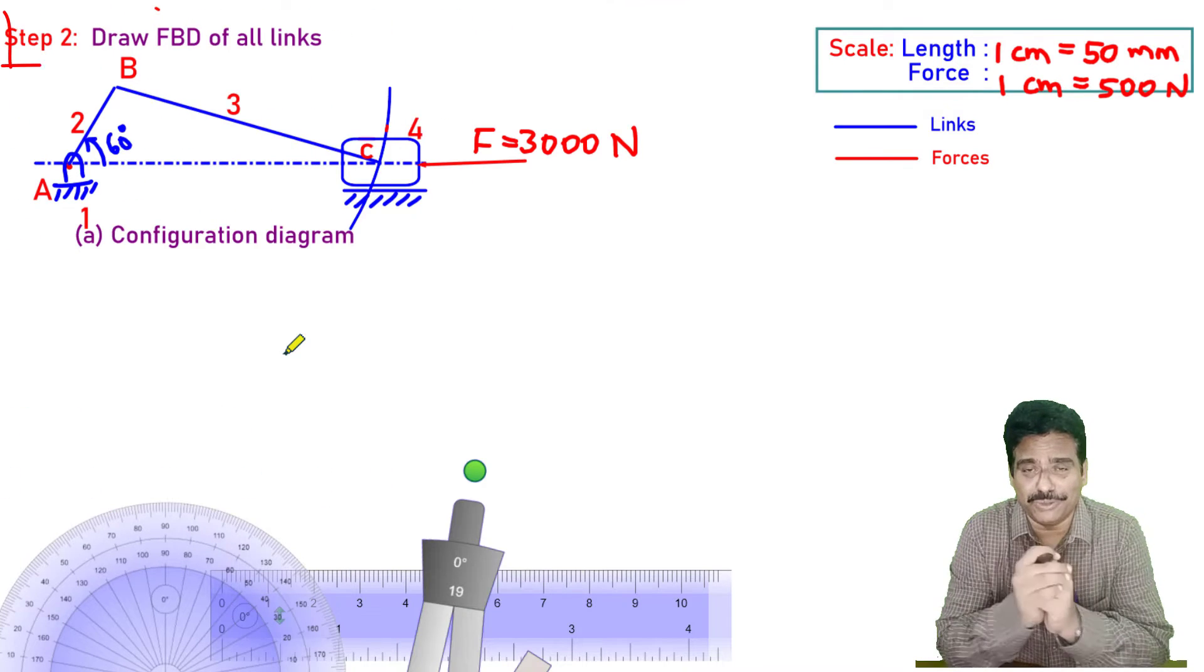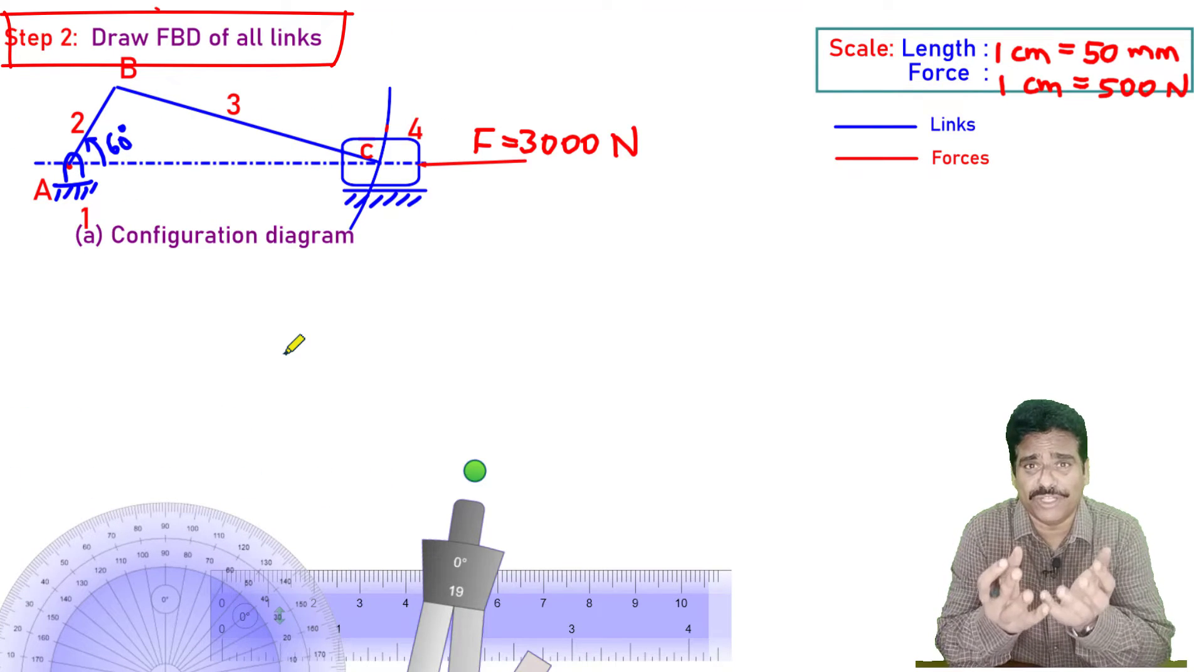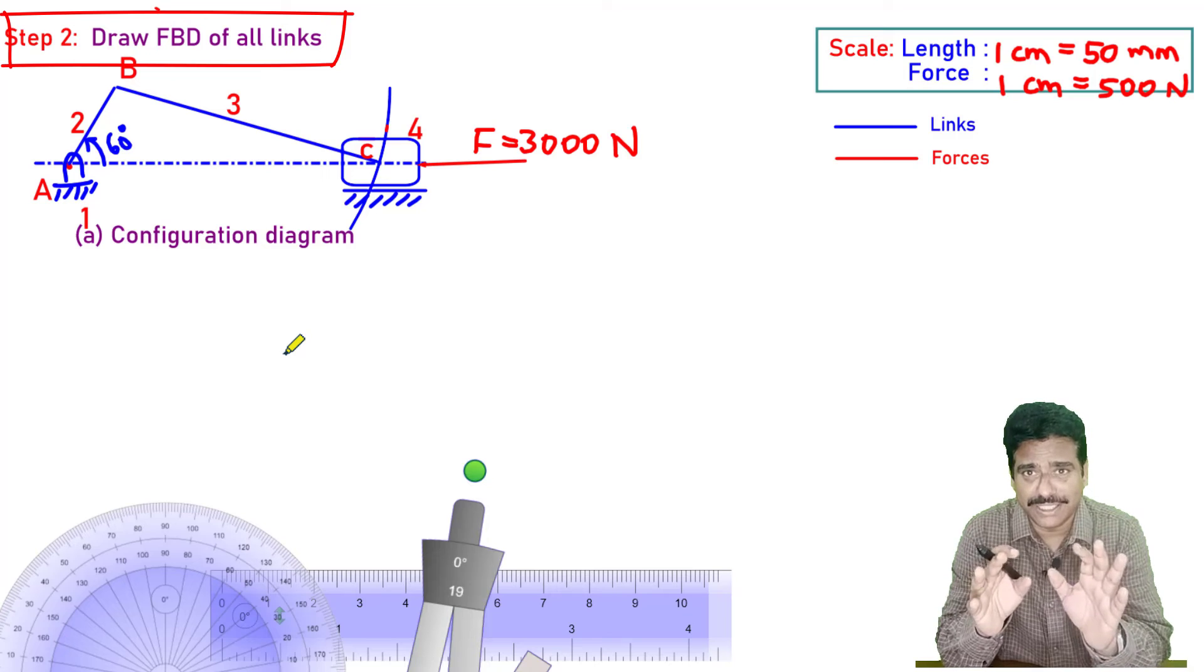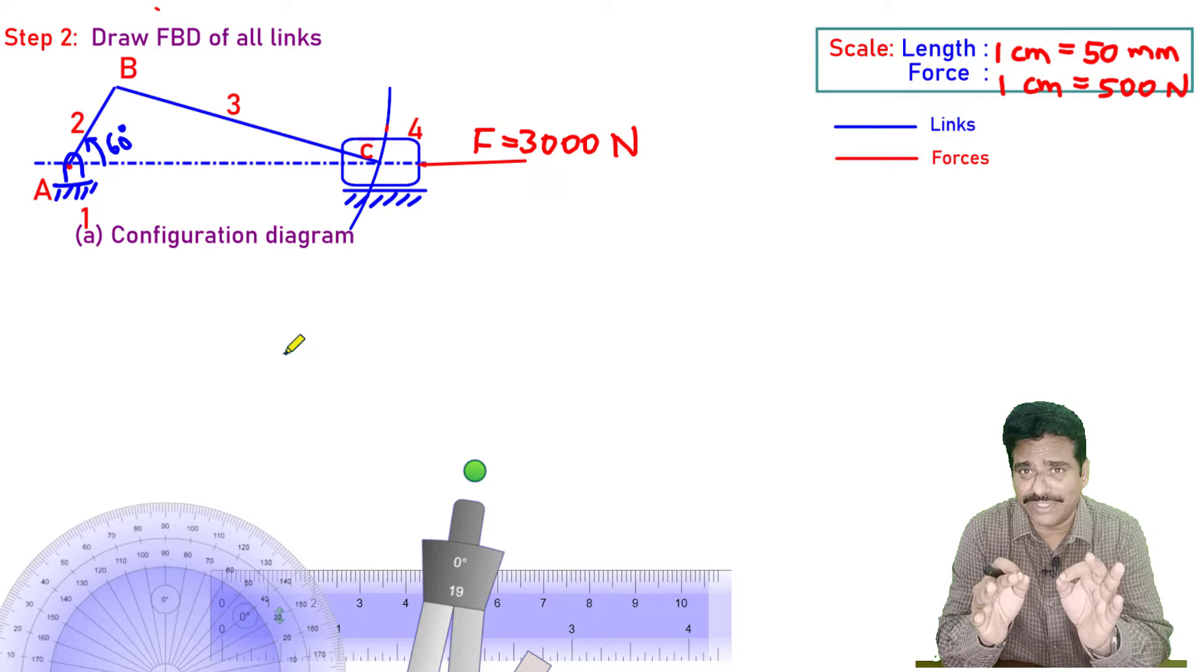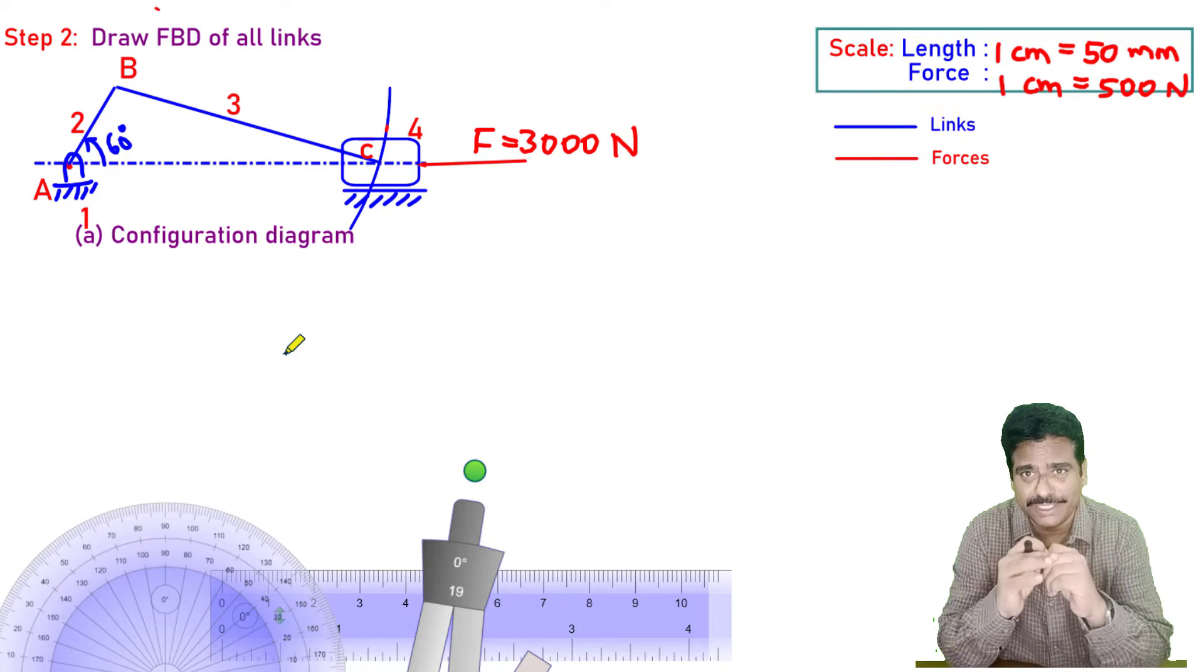Now we will move on to step number two. Step number two, you know that we need to draw free body diagram of all the links. But as we are aware, link 1 is a fixed link and hence it will not have any free body diagram. So we have to draw free body diagram of the remaining three links now.